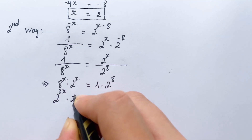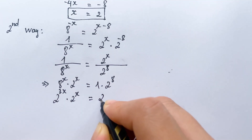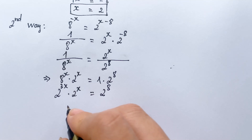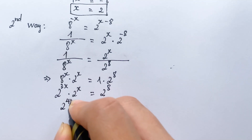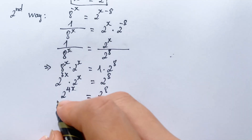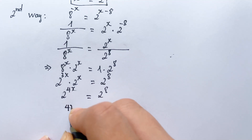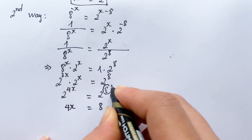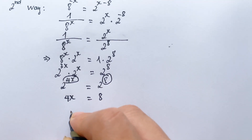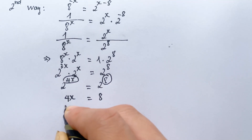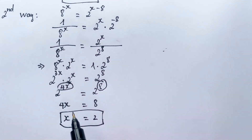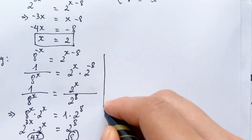You can write 2 power 3 times x equals 2 power x times 2 power x times 2 power x, giving 2 power 4x equals 2 power 8. Because we have the same base the powers are equal, therefore x equals 2. For the first way we have x equals 2, for the second way we also have x equals 2.